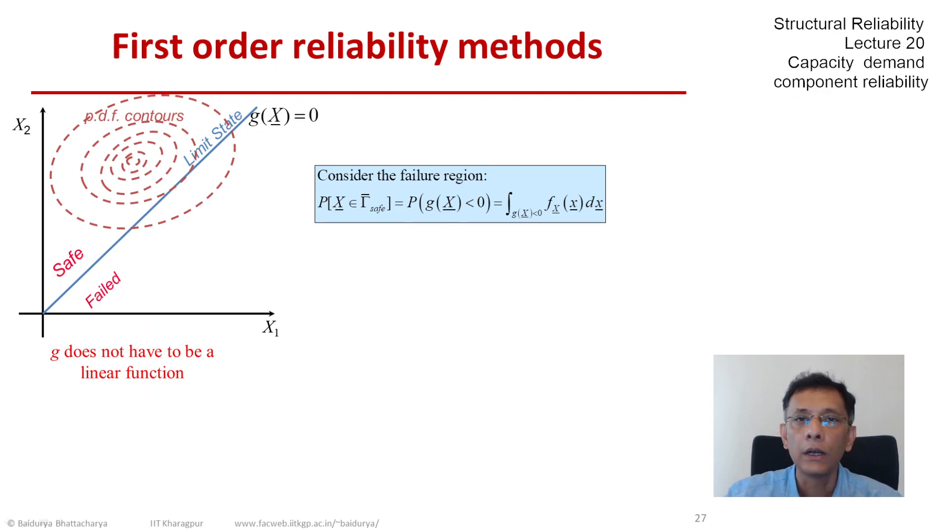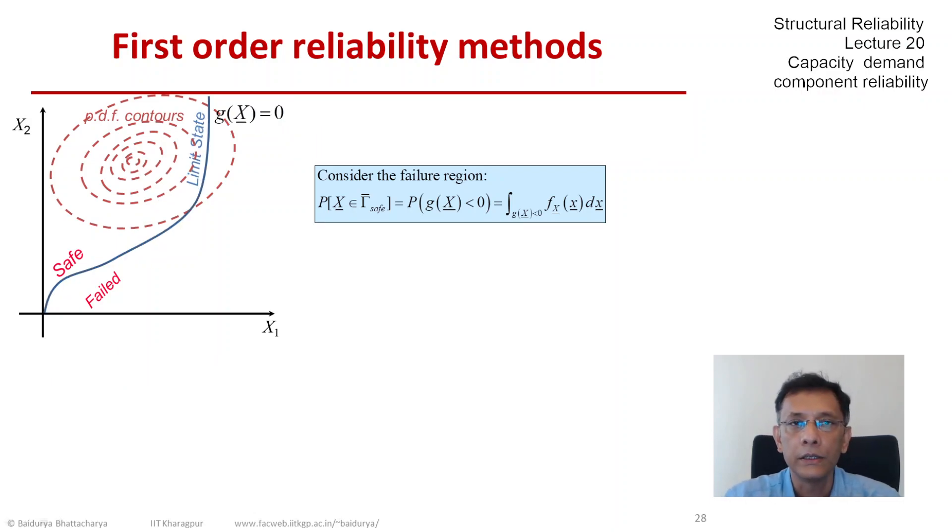We might as well bring in a clearly non-linear looking function and let us say this is the shape of our limit state equation and that separates the space of basic variables into safe and failed regions.